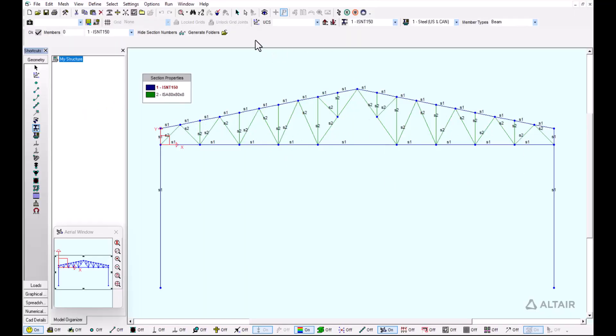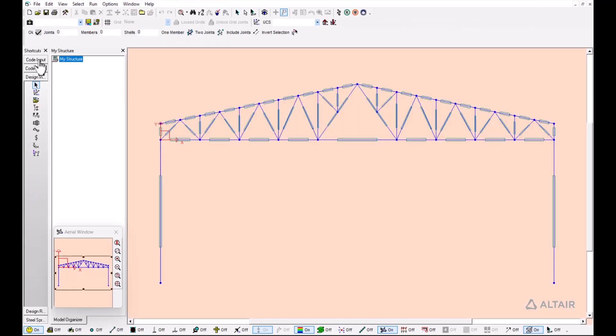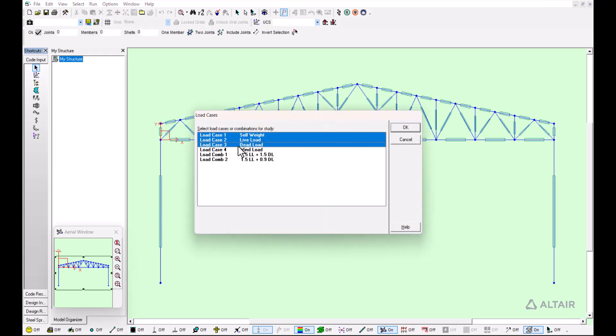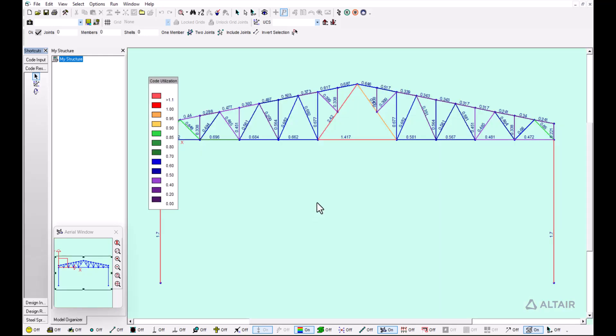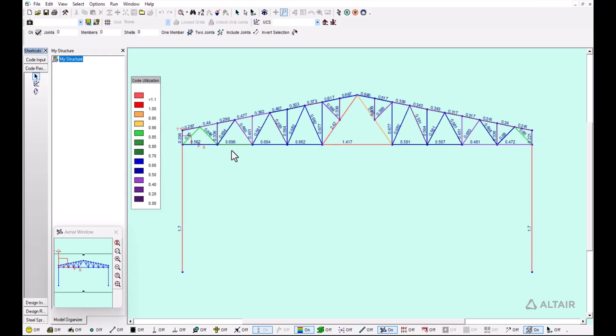We have done this, and now we can run the steel design module to verify if our checks are correct. The first thing we do is come here into the code input, select all of our members, go to run, and select all of our load cases. Once we do that, we can see here in the code utilization that the code check is passing for the majority of the members.